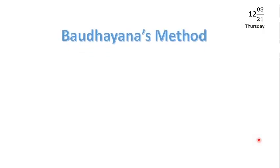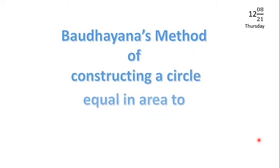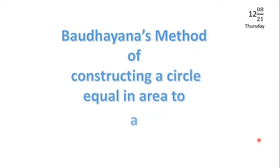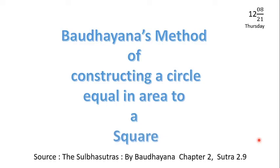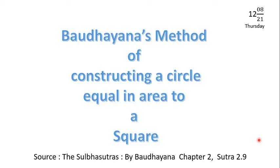Baudhayana, way back in 800 BC, has suggested a method of constructing a circle which is equally nearer to a square, and the source for this is the Shulva Sutras written by Baudhayana and others, chapter number 2, Sutra 2.9.